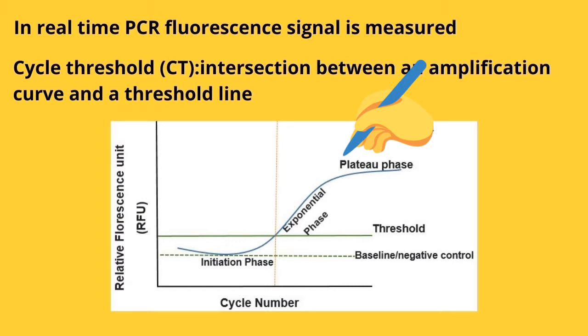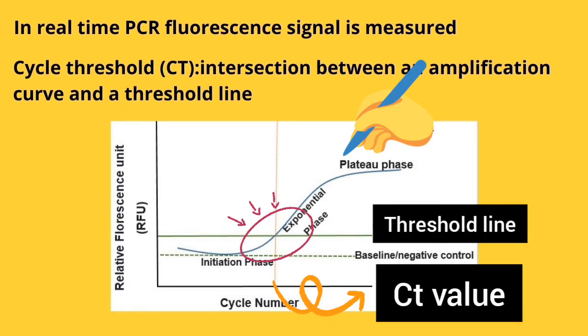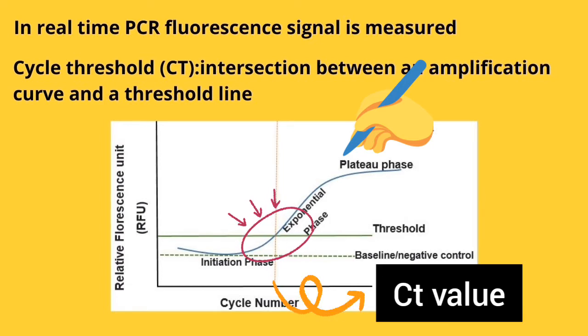In each cycle, product will be doubled and accumulate, and we have exponential phase. Eventually, the cycle number will be recorded when fluorescence signal crosses signal threshold, which is called CT value or threshold cycle. CT value is used to measure the concentration of DNA in the reaction.